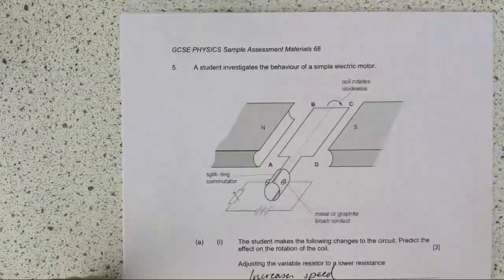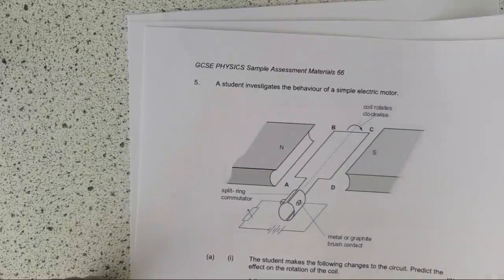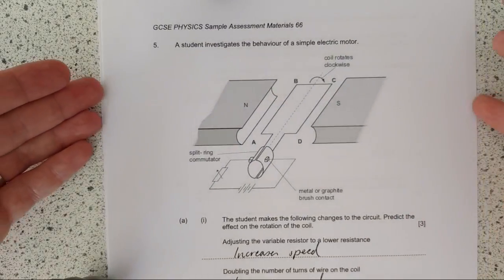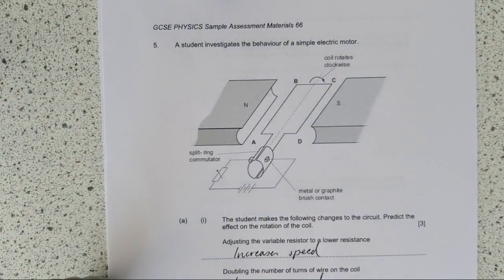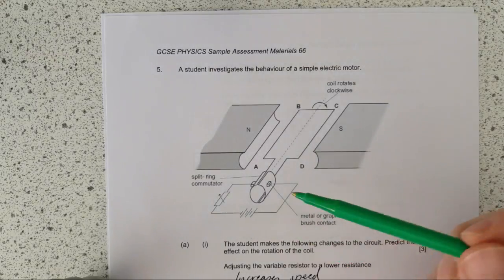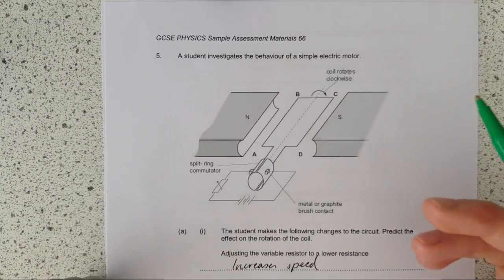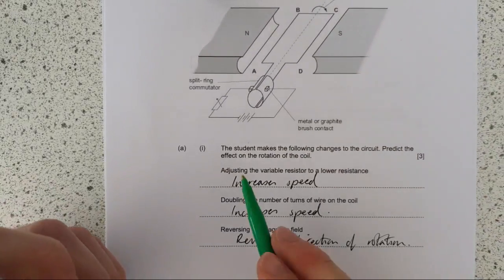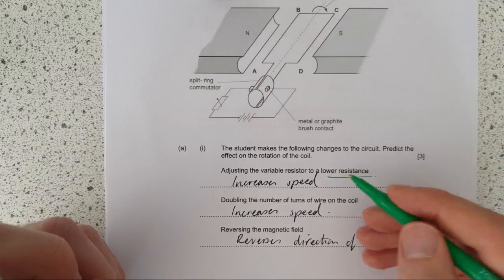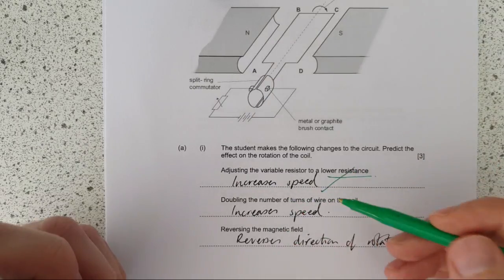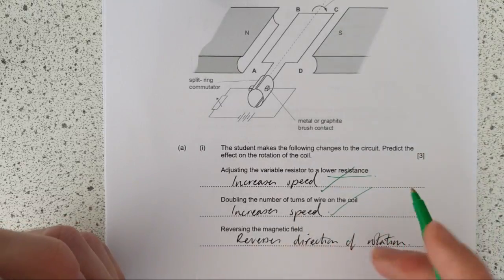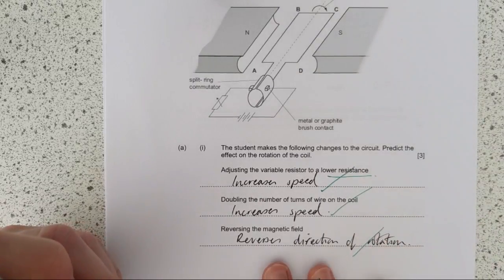So this one is about a motor. It's a DC motor, you can see straight away. I'm going to do this one, and then one on vectors and scalars. A student investigates the behavior of a simple electric motor. The student makes the following changes of the circuit predict the effect of the rotation on the coil. How does adjusting the variable resistor to a lower resistance? Well, a lower resistance is a higher current. So that is going to cause a bigger magnetic field. So therefore, it's going to increase the speed. Doubling the number of turns on the wire is going to increase the speed. Reversing the magnetic field is going to reverse the direction of the rotation.